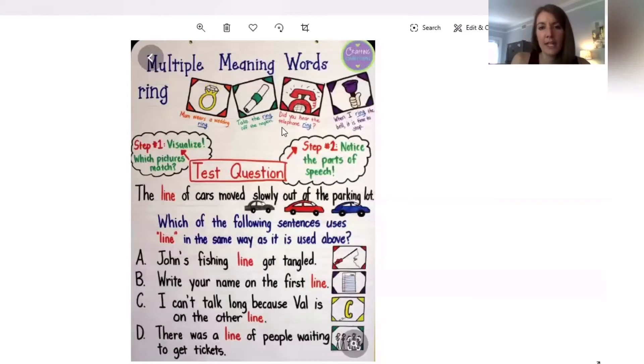The third one says did you hear the telephone ring? That type of ring, I'm picturing a telephone. I saw the clue, did you hear the telephone ring? So we actually call that a direct object, which we don't cover in second grade, but I can already just picture in my head that the ringing is the sound that the telephone is making.